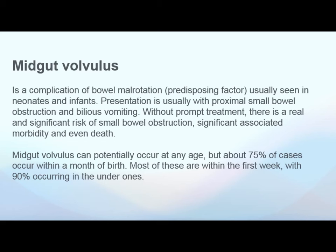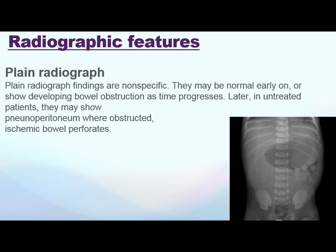So we are going to go in sequence. Midgut volvulus is a complication of bowel malrotation, so the predisposing factor for midgut is malrotation. It is usually seen in neonates and infants — about 90% of cases are below one year of age, and 75% of cases occur within one month of birth, with most within the first week. The patient presents with small bowel obstruction features and bilious vomiting. It is very serious — if immediate treatment and management is not done, it may progress to ischemia.